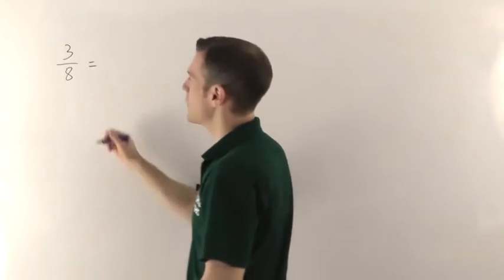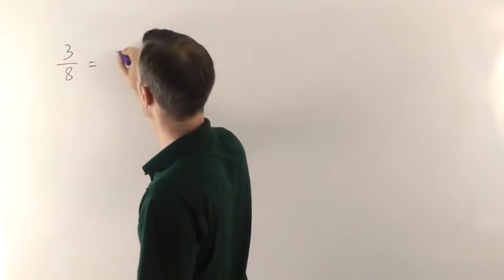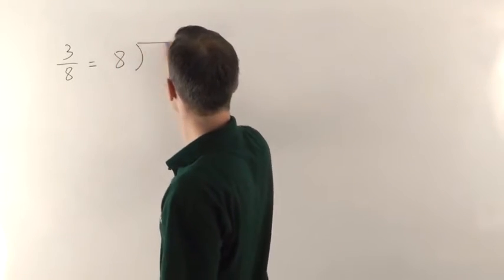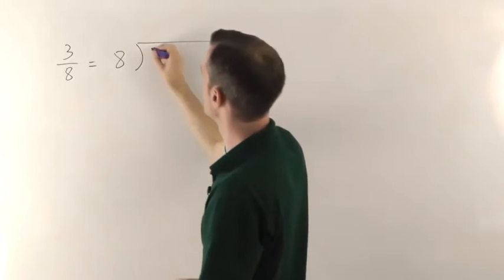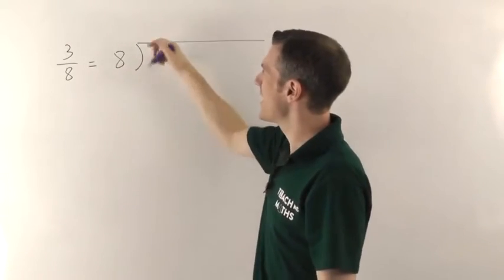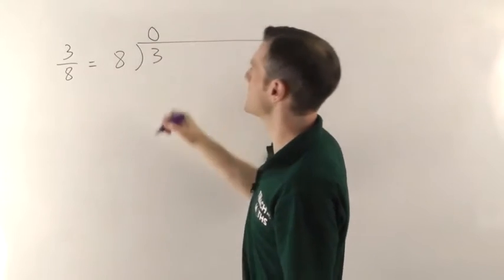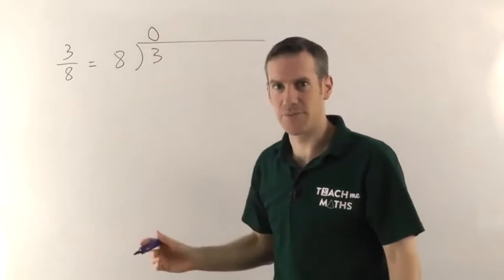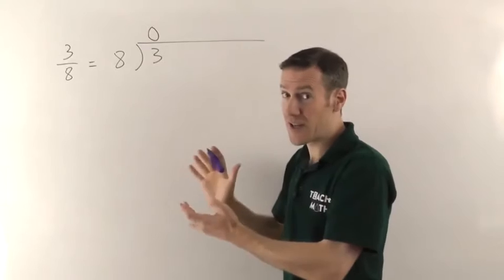So this is just normal division here. We want to know how many 8s go into 3. So 8s into 3. The difficulty is you say how many 8s in 3, it goes 0 times. And then what do you do? Well there's just a little trick here you have to remember.